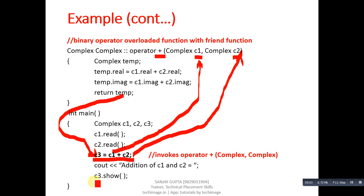If you want to pass all the implicit arguments explicitly in a function, you have to convert that function as a friend function. You can implement these programs on your laptop or desktop to understand the concept well. Thank you for watching this video.